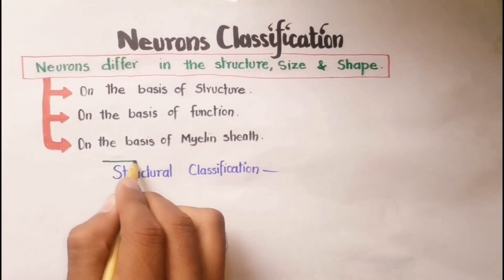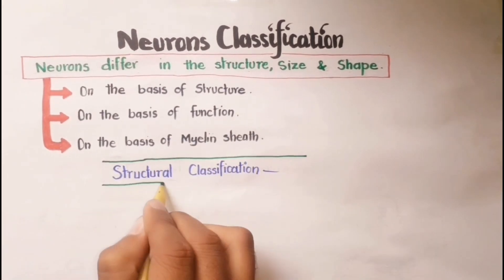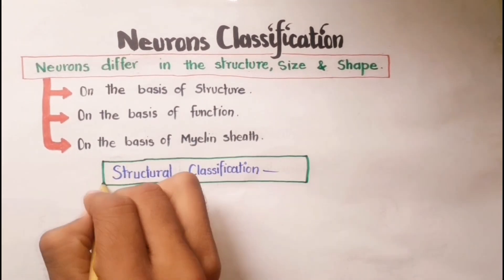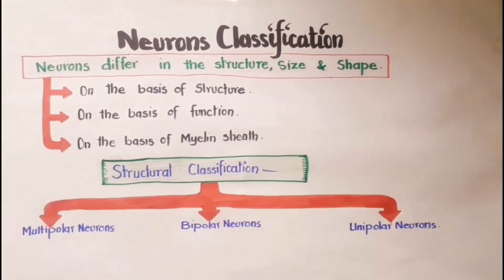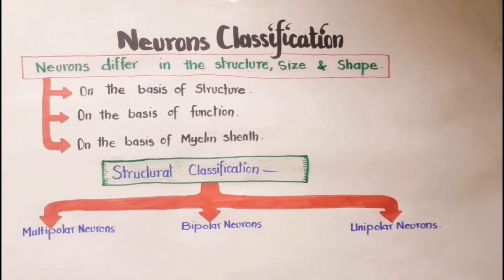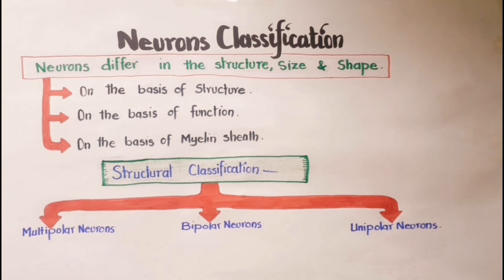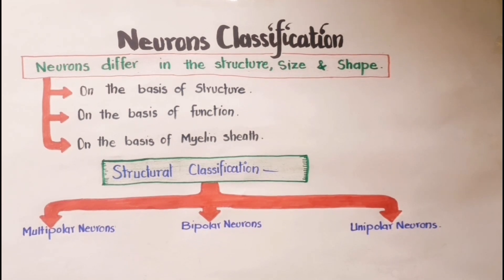On the basis of structural differences, neurons are classified into three major groups: multipolar neurons, bipolar neurons, and unipolar neurons.